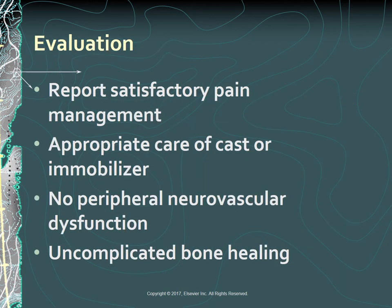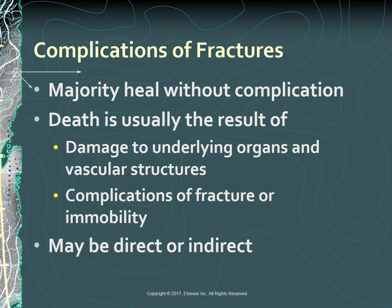The expected outcomes are that the patient with a fracture will report satisfactory pain management, demonstrate appropriate care of the cast or immobilizer, experience no peripheral neurovascular dysfunction, and experience uncomplicated bone healing. The majority of fractures heal without complications. Death after a fracture is usually the result of damage to underlying organs and vascular structures or from complications of the fracture or immobility. Direct complications include bone infection, bone union problems, and avascular necrosis.